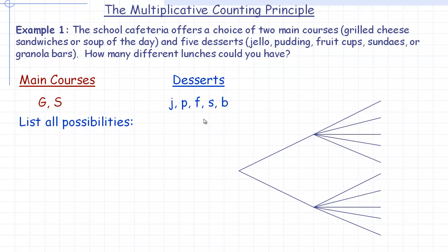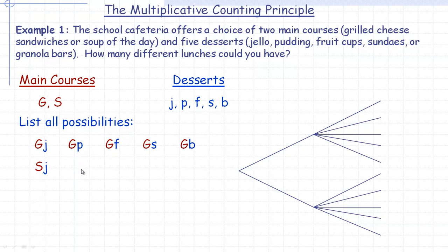You could list all possibilities. Starting with grilled cheese: G-j, G-p, G-f, G-s, G-b — those are all the lunches with grilled cheese as the main course. Then for soup of the day: S-j, S-p, S-f, S-s, S-b. If you count these, you'll notice there are 10 possible lunches.